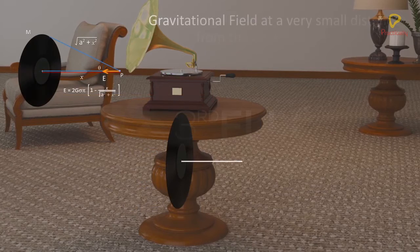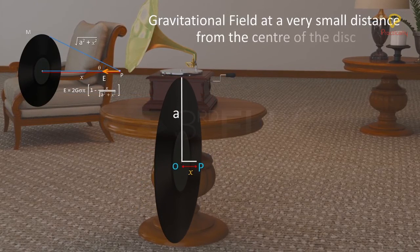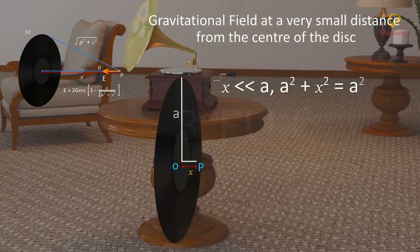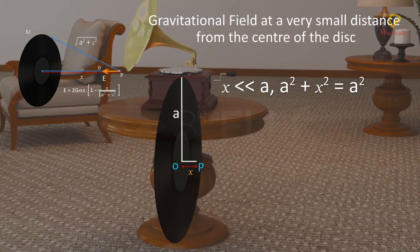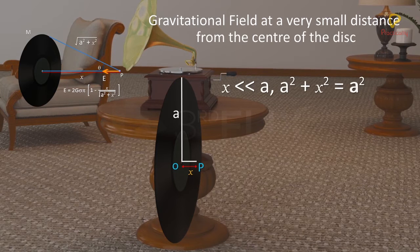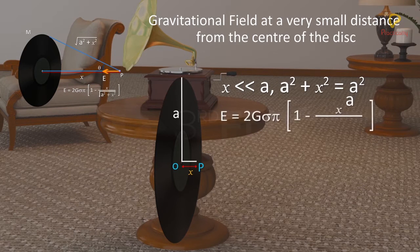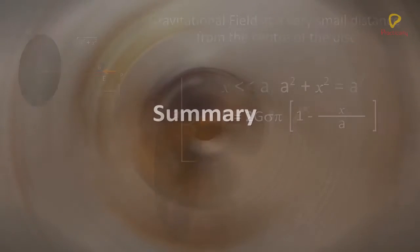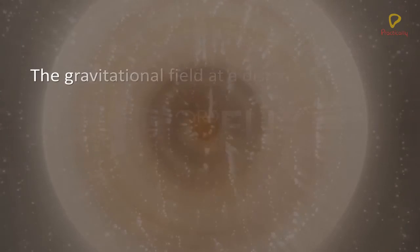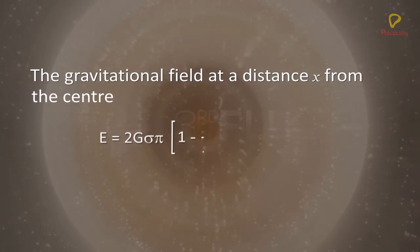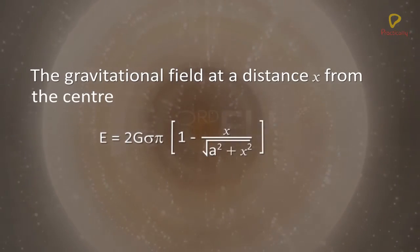Gravitational field at a very small distance from the center of the disc: When X is very small compared to A, A squared plus X squared is approximately equal to A squared, and the magnitude of gravitational field is 2G sigma π [1 minus X by square root (A squared plus X squared)].